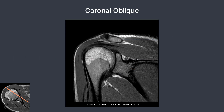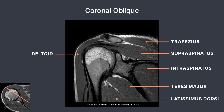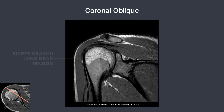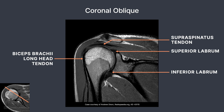Muscles demonstrated include the deltoid, trapezius, supraspinatus, infraspinatus, teres major, and latissimus dorsi. Visible tendons include the biceps brachii long head, which inserts into the bicipital groove, and the supraspinatus, seen crossing the superior aspect of the humeral head. The superior and inferior labrum are visible as dark, somewhat triangular-shaped structures at the edge of the joint. The labrum is a ring of fibrous cartilage that surrounds the glenoid and stabilizes the joint.